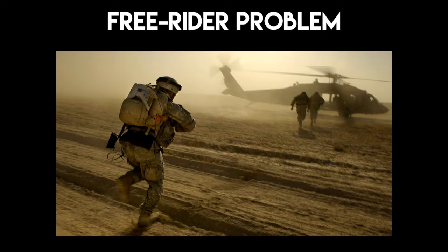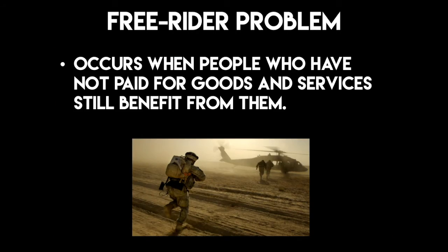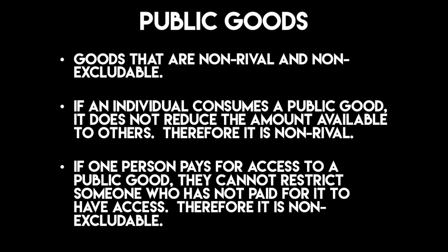Non-excludability gives rise to the free rider problem. Non-excludability applies to something like the national army. If you're paying your taxes, some of that money goes to the government for defense. But if you don't pay taxes, you're also protected by the same army paid for by people who do pay their taxes. So this is the free rider problem — a situation in which people who haven't paid for goods and services still benefit from them. Another example in the UK is the NHS: if somebody doesn't pay taxes, they don't directly fund the NHS, but they still benefit from it.